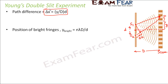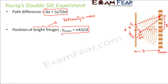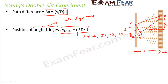Now, how do we find out the position of the bright and dark fringes on the screen? Bright fringes correspond to positions where the intensity is maximum. The position of the bright fringes is given by y equals n·lambda·D divided by d, where n can take integer values: 0, ±1, ±2, ±3, and so on.